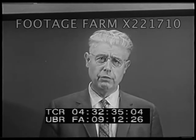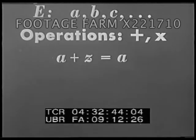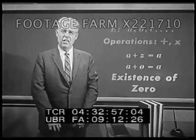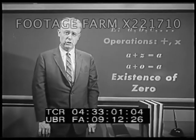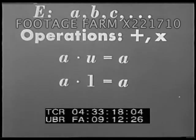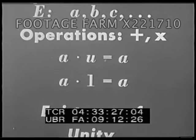Now we come to a property that very possibly has never been explicitly pointed out to you before — a fact you know but have just taken for granted. In a field, there must be a single element that can be added to any other element of the set and leave it unaltered. We'll call this zero, and label it the eighth property: the existence of zero. There are number systems, not fields of course, that do not possess a zero element. Next, there must be a single element U that when used to multiply any other element leaves that element unaltered. We call this one, and this property is known as the existence of unity. Hard as it may be to imagine, there are number systems that do not possess a unit element.